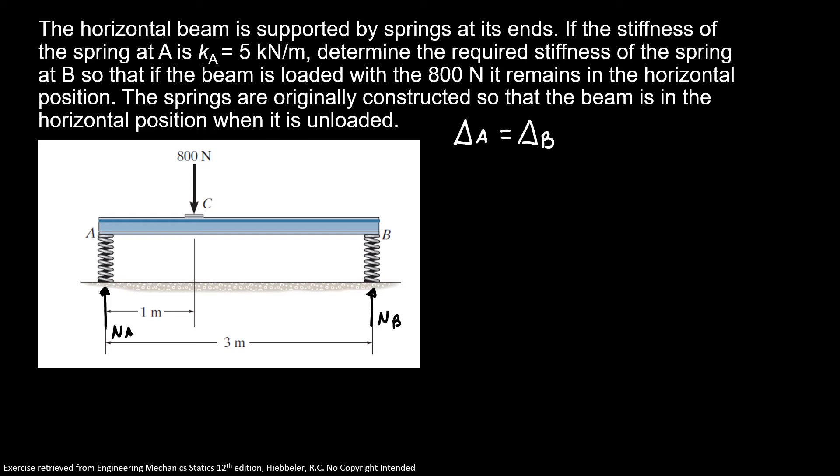So we can do the sum of moments at B equals 0, counterclockwise is positive. So here I have 800 times 2, because the distance is 2 meters, equals NA times 3. So we can find that our NA equals 1600 over 3, and our NA equals 533 newtons.